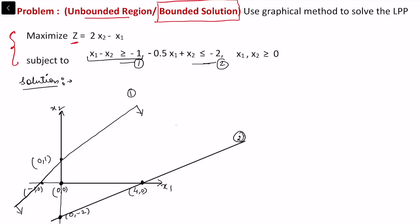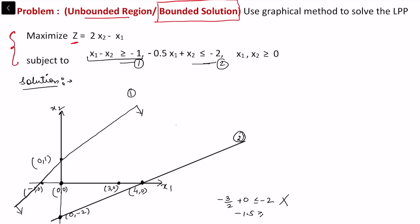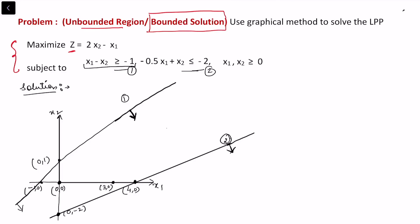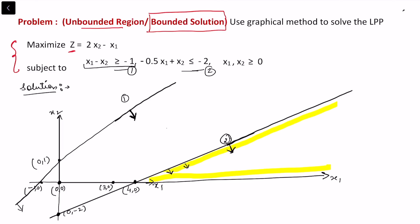The second constraint touches the axes at (4, 0) and (0, -2). To identify the region, test the point (3, 0): substituting gives -0.5 times 3 plus 0 = -1.5, and we check if this is less than or equal to -2 — it is not, since -1.5 is greater than -2. So the region is on the other side. We see that the first constraint becomes redundant, and extending the x1 axis and constraint 2, the relevant feasible region is identified.